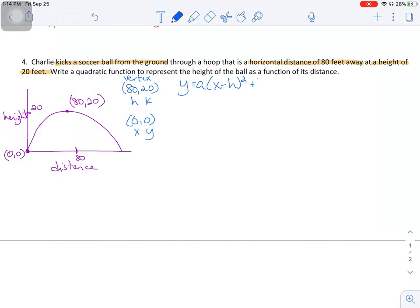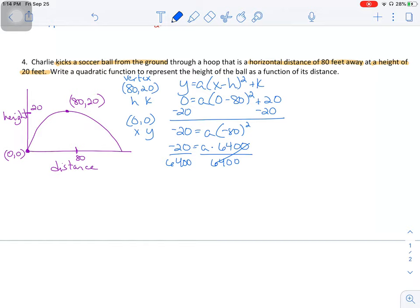So Y is equal to A times X minus H squared plus K. So 0 equals, A is the unknown, X is 0 minus 80 squared plus 20. Let's start solving this. So I'm going to subtract 20. A is equal, no, equals A times negative 80 squared. Negative 80 squared is 6,400. Divide both sides by 6,400. So what I'm going to do in my calculator is put this fraction in and see if I can't reduce the fraction to something that's a little bit more manageable. So it's going to be negative 1 over 320.